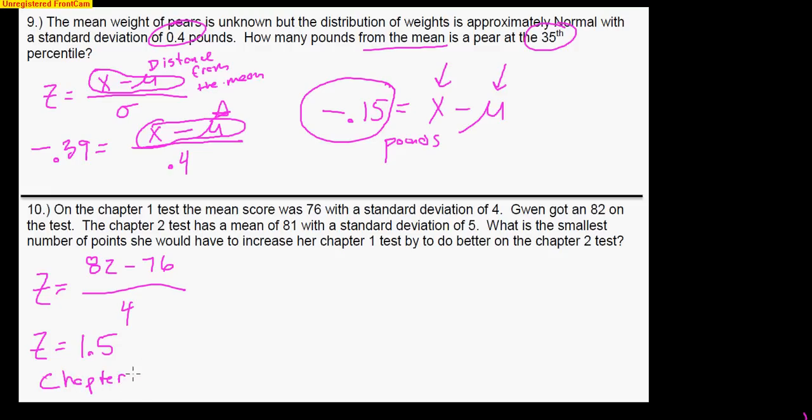Now, that was on the Chapter 1 test. I'm going to make sure I mark that Chapter 1. Now, there's a Chapter 2 test. The mean is 81, standard deviation is 5. What's the smallest number of points she would have to increase her Chapter 1 test by to do better on the Chapter 2 test? So on the Chapter 2 test, the mean is an 81. The standard deviation is a 5. I want to figure out what score would she need to do better on the Chapter 2 test. So to answer this, I'm actually going to take this Z-score and I'm going to set it equal to the formula for Chapter 2. So here was Chapter 1 on the left. I'm going to do Chapter 2 on the right. Now, understand that this is the Z-score that would allow her to do exactly the same on the Chapter 2 test. So if I solve this by multiplying by 5, adding 81, I get a score of 88.5. Now, this is what she would need to tie.